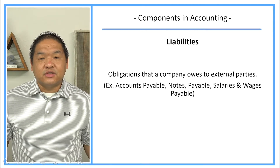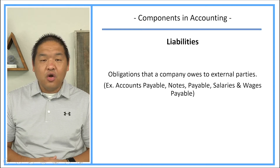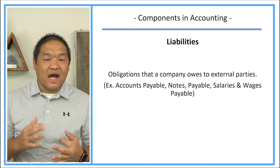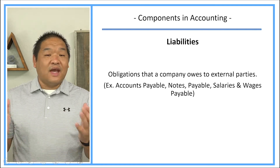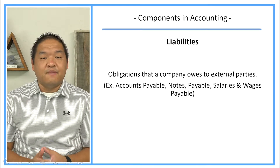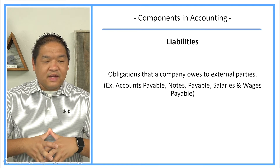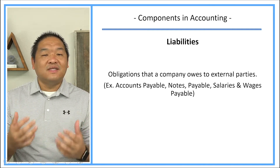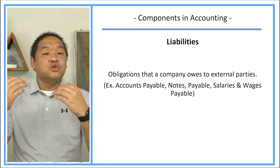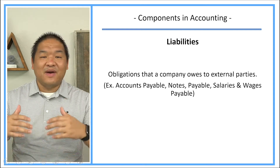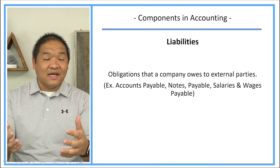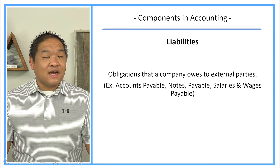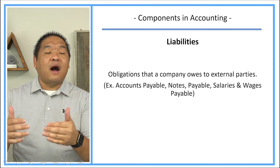Liabilities are obligations that a company owes to an external party. Examples would be accounts payable, notes payable, and salaries and wages payable — really anything that has 'payable' at the end of its name is usually a liability. In real life terms, liabilities are debt — something that we owe to someone else. For a business, it might be a vendor, a customer, a bank, or another company. There are many different external parties that a company might have an obligation with.